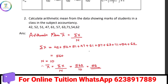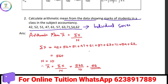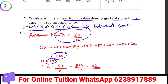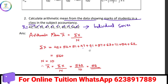Let's calculate the arithmetic mean. First, for the individual series: calculate the arithmetic mean from the data showing marks of students in a class. The individual series equation is sigma x by n. Sigma x is the total of all x values: 42 plus 52 plus 51 plus 47, and so on. The number of items n is 10. So the arithmetic mean equals the total x divided by 10.